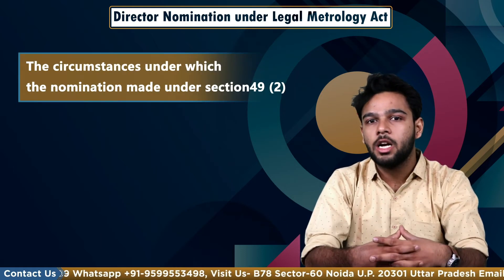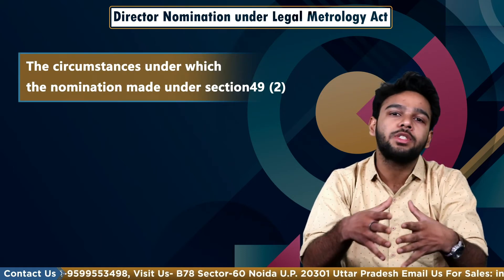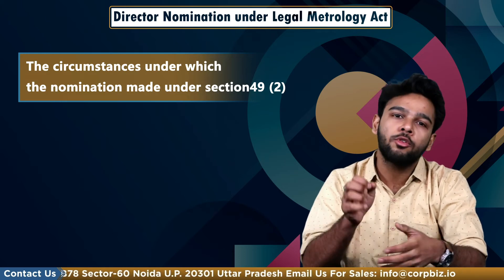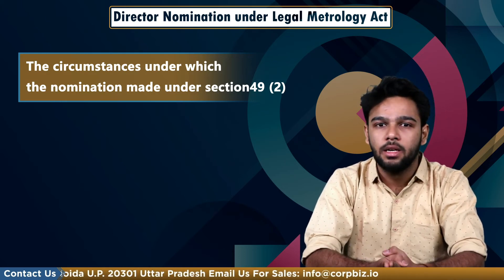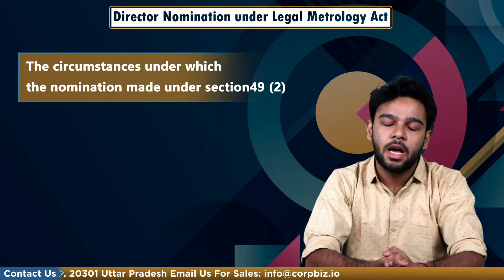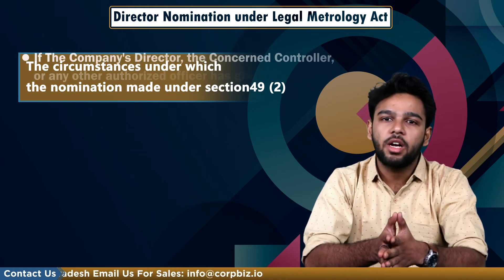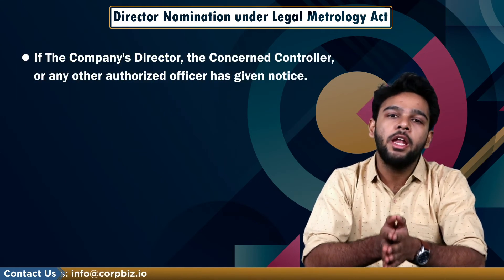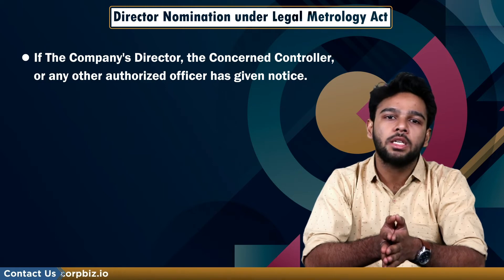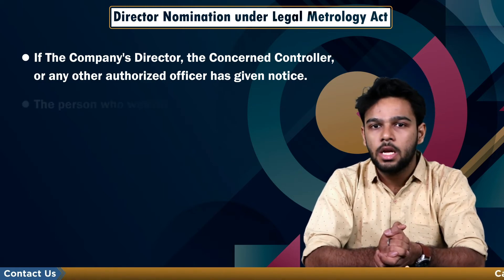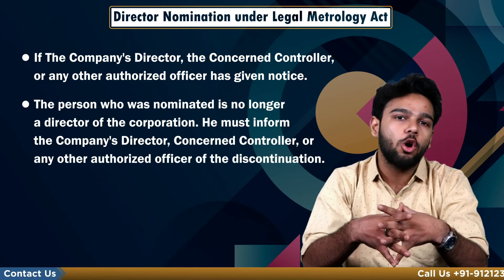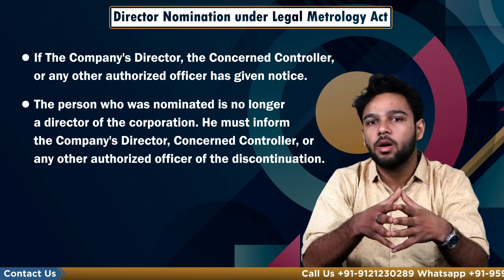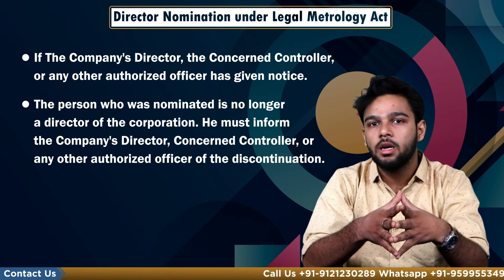Now let's talk about the circumstances under which the nomination made according to Section 49(2) of the Legal Metrology Act of 2009 can be cancelled. These include: when the company's director, the concerned controller, or any authorized officer has given notice; and when the person who was nominated is no longer a director of the corporation — they must inform the company's director, concerned controller, or any other authorized officer of this discontinuation.